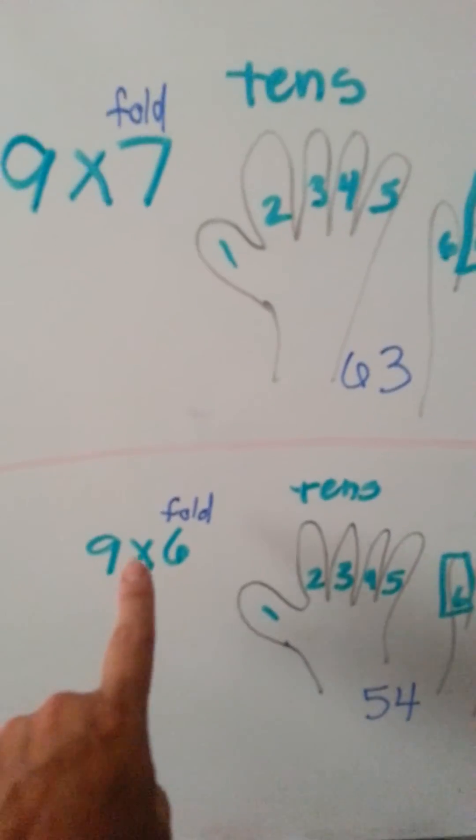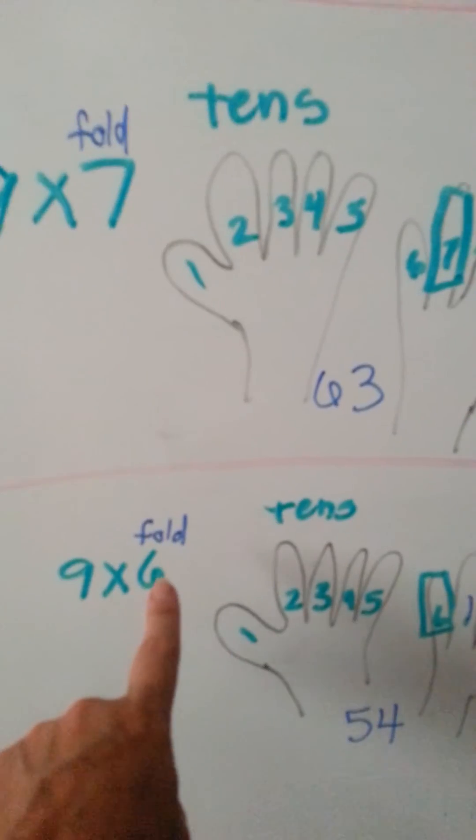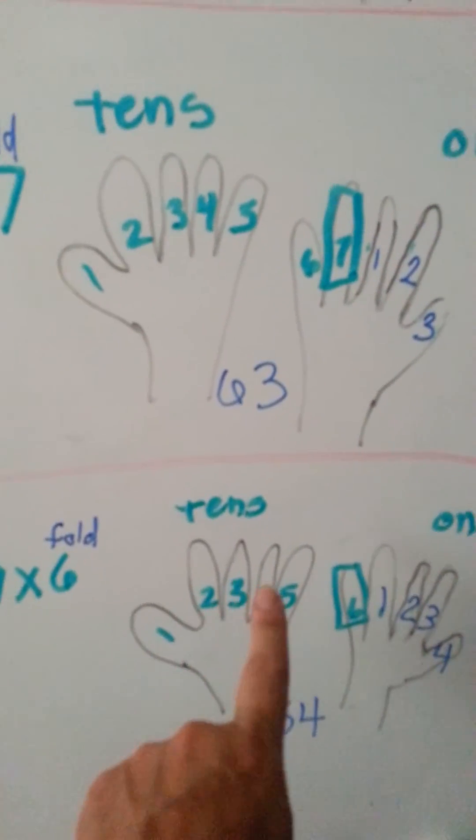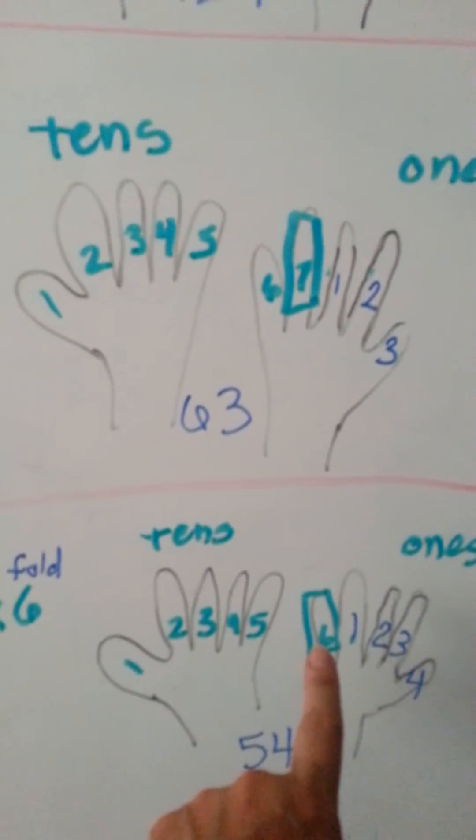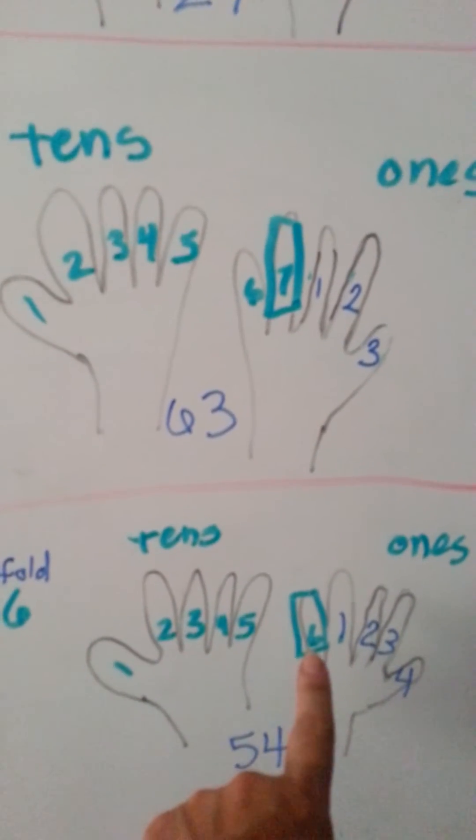Here's another example. 9x6, we're going to fold the sixth finger. 1, 2, 3, 4, 5, we're going to fold the pinky on the right hand.